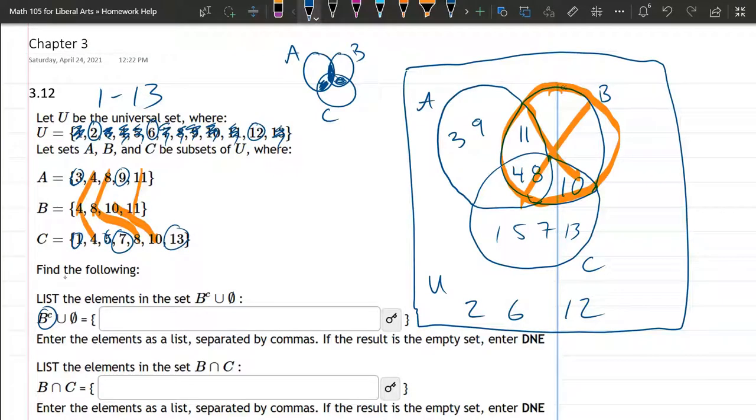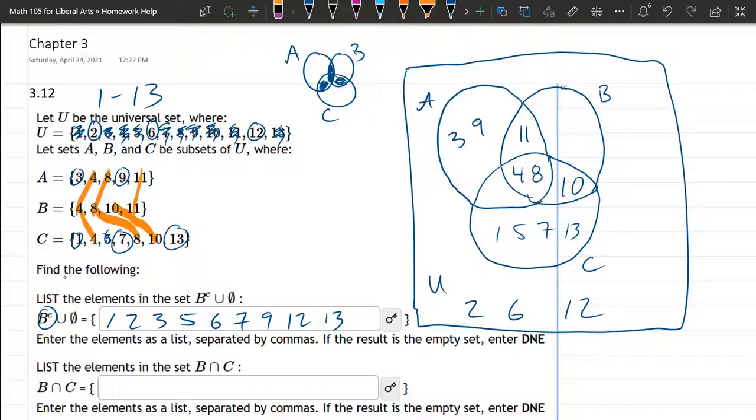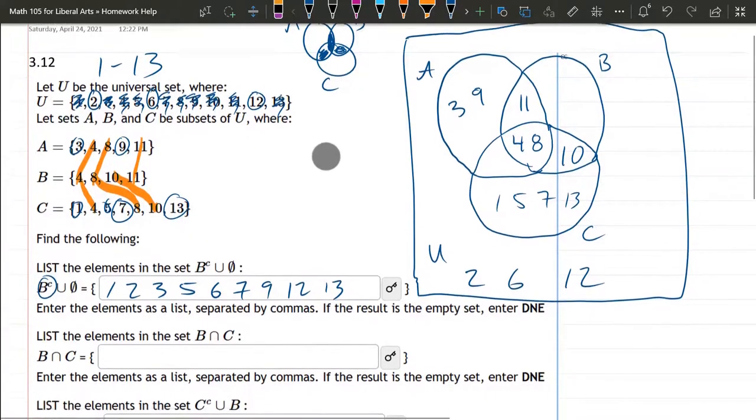So we want everything not in B. And that inside B is 4, 8, 10, and 11. So we want every number that's not 4, 8, 10, and 11. So 1, 2, 3, skip 4, 5, 6, 7, skip 8, 9, skip 10, skip 11, 12, 13. So that's every number that's not in the B set. Now we can cross and get rid of this.